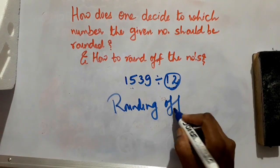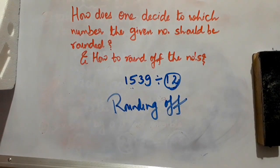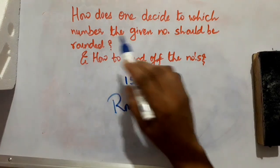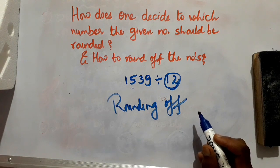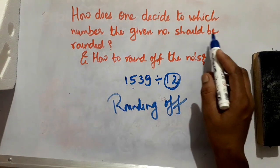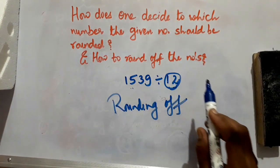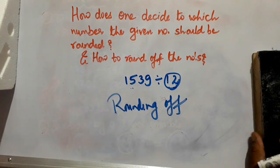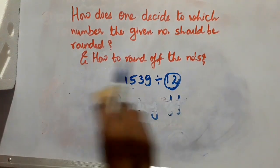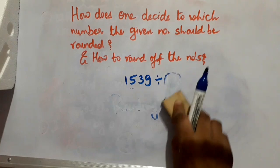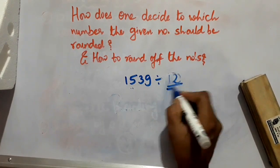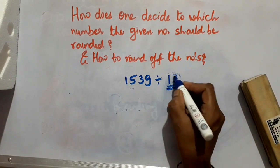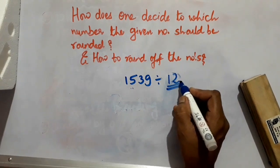Another thing is rounding of numbers. Rounding of numbers will help you do calculations faster. Now, how does one decide to which number the given divisor should be rounded, and how to round off the numbers? Say you are given 1539 divided by 12, so 12 is the divisor and this number has to be rounded off.